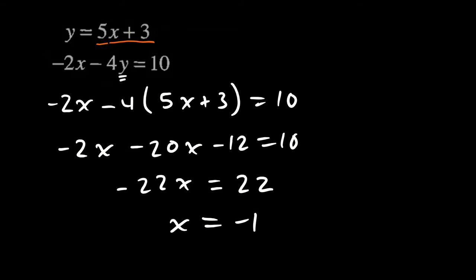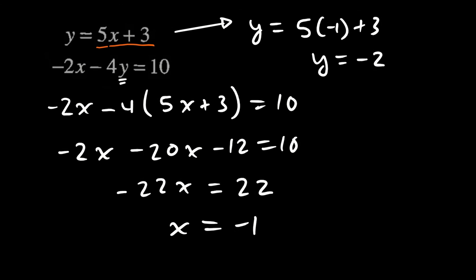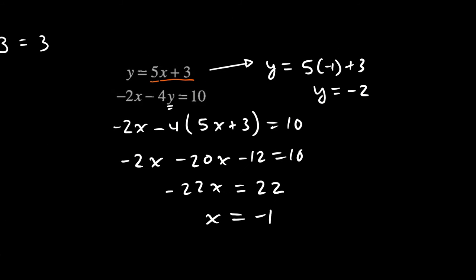And if X is negative one, this top equation is the perfect place to figure out what Y is. Y is going to equal five times negative one plus three. So we're looking at negative five plus three. So Y is the number negative two. So my solution to part B is the ordered pair negative one for X and negative two for Y.